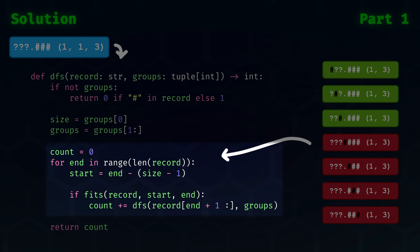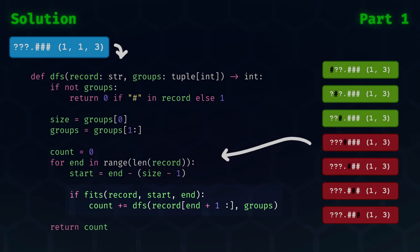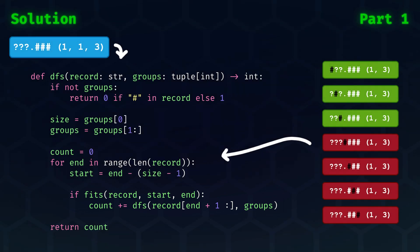Then we start with checking all possible next states, as shown on the right. The count is zero, and we check for every possible end position in the record. Firstly, we need to determine the start of the segment or group, then we can see if a segment fits in the record. We do this using the fits function. If it fits, then we add to our count the number of arrangements determined by solving the sub-problem. To solve the sub-problem, we recurse using a substring and the updated group's tuple.